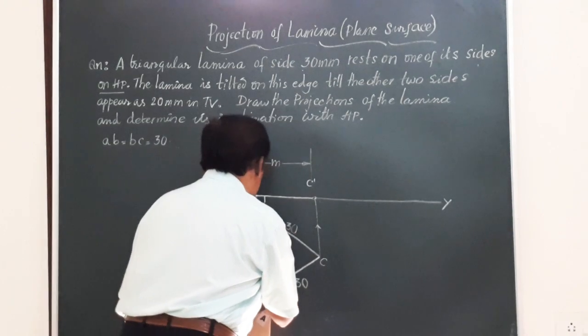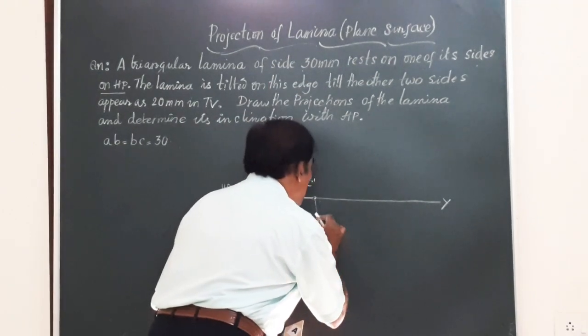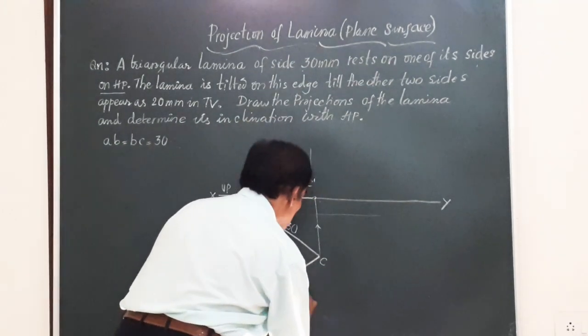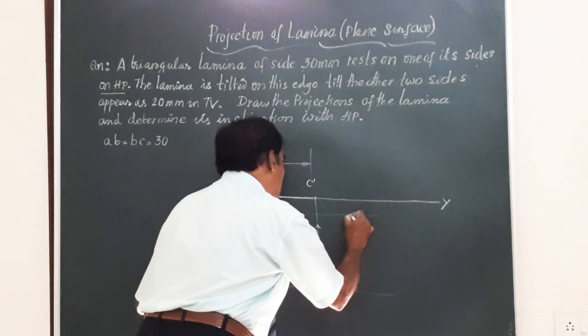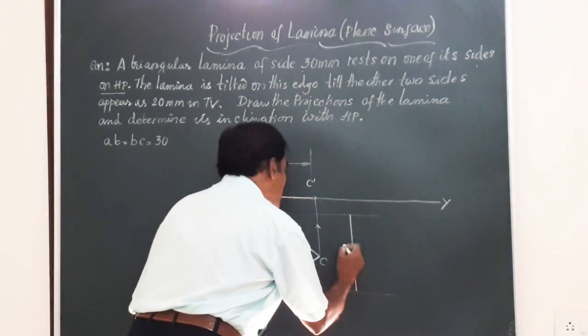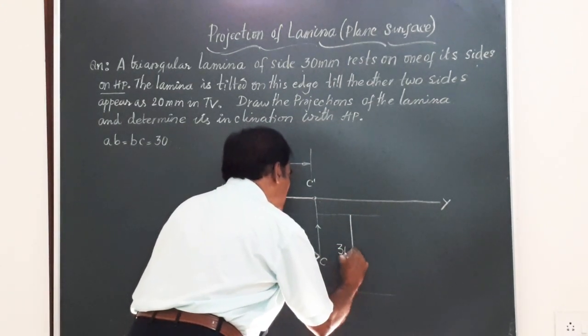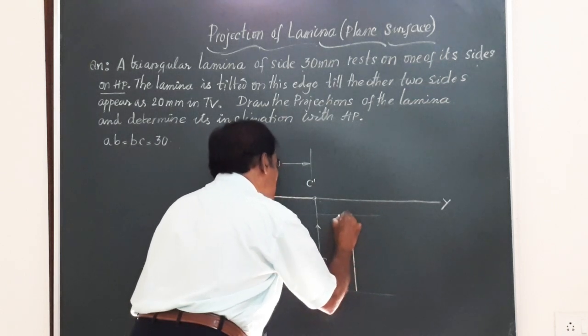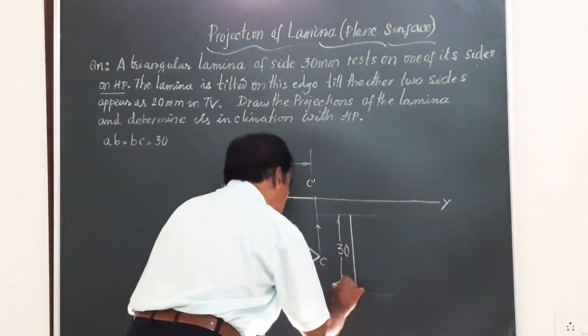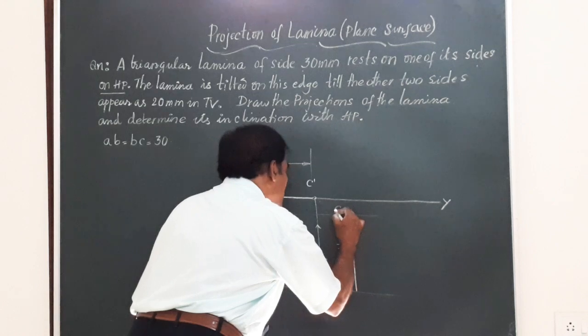So, friends, I know very well that the top view you get is going to be an isosceles triangle. On this side, which is on HP, we will always measure 30, since it is on HP. And this is going to be A, this is going to be B.